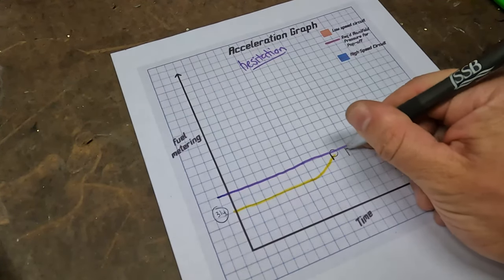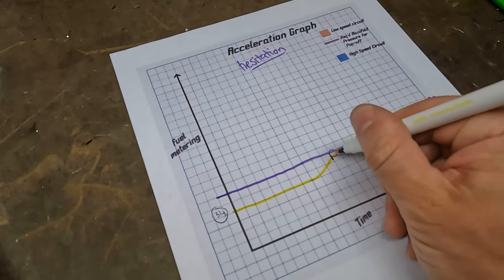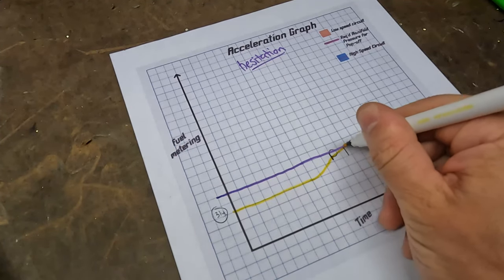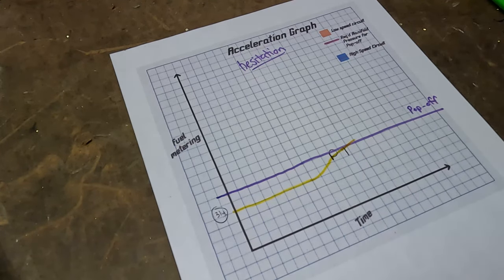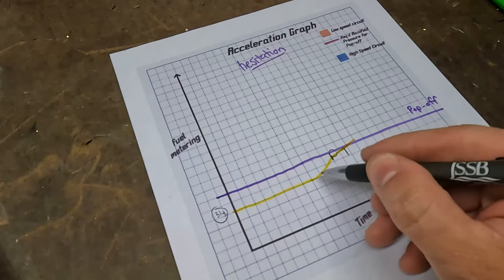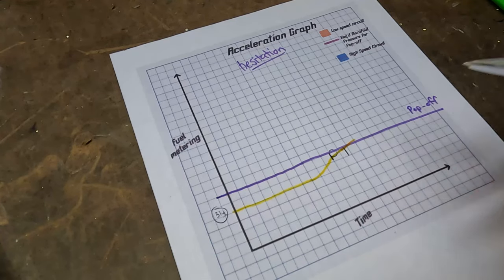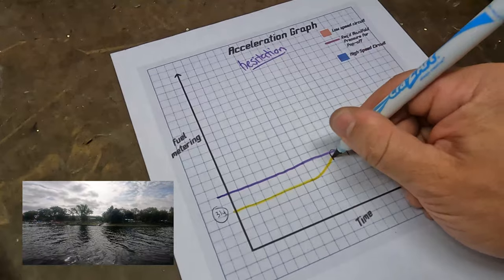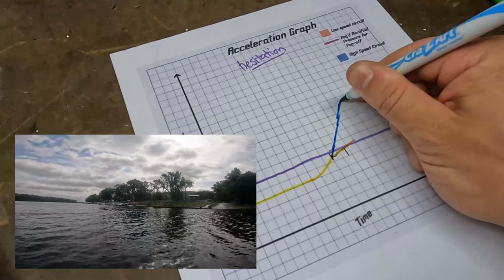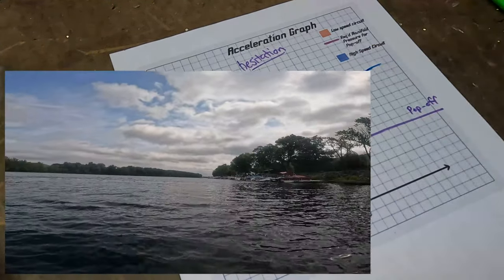Usually if you give it enough time and let that fuel meter in, you will reach pop-off. But in this situation we're on the leaner side, you're not metering that much fuel, and eventually you're going to be able to hit pop-off, clear out, and be able to accelerate up.